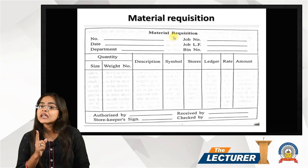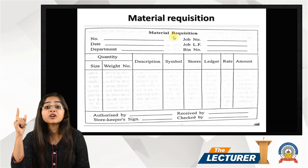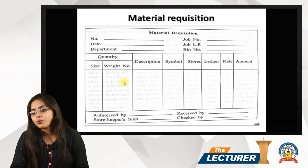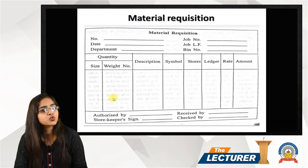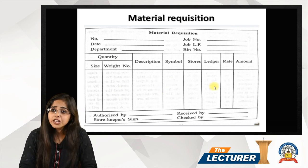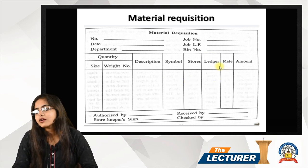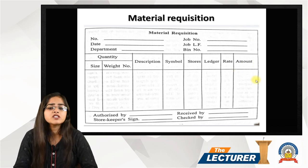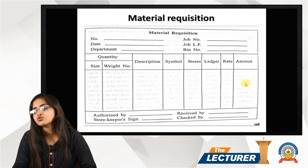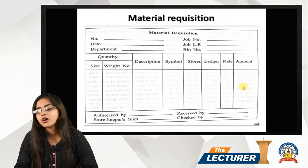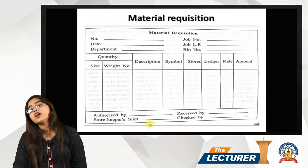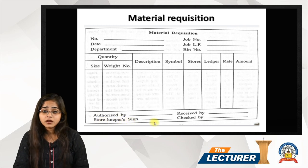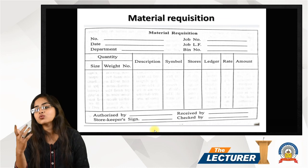Then comes the bin card number — the bin number identifies the material in the actual location. The quantity includes the size and weight, measured in kilograms or tons, with a symbol. Then comes the stores ledger detail and the rate. The total amount is calculated on this basis. Authorized by — there must be an authorized signature, whether it is the purchase officer or purchase manager. Then comes the storekeeper's sign. This completes the material requisition document.